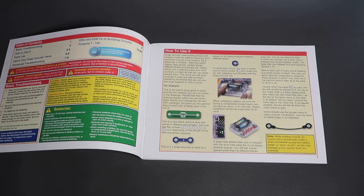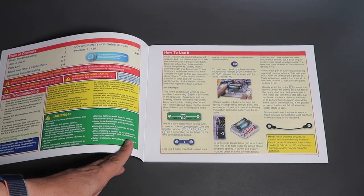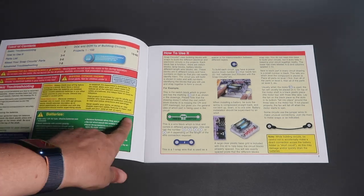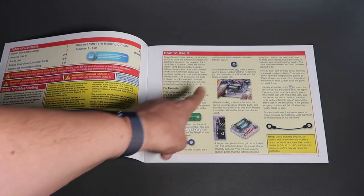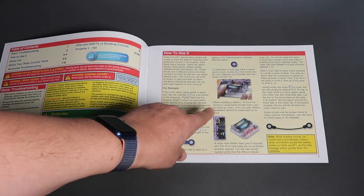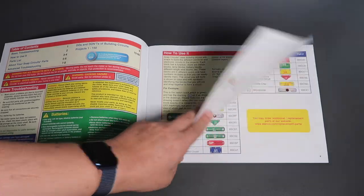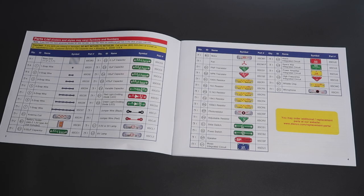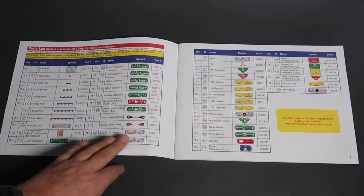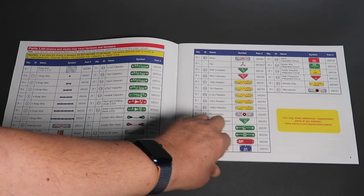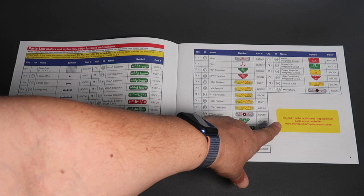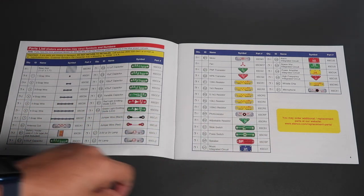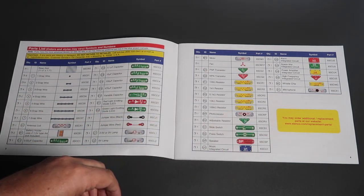We already talked about the manual a little bit, but it's very well put together. There's a section here on how to use the batteries, how to actually use the component parts. There's a complete component list. And in fact, it tells you here how to request replacement parts from their website. I guess in case you lose or break something.